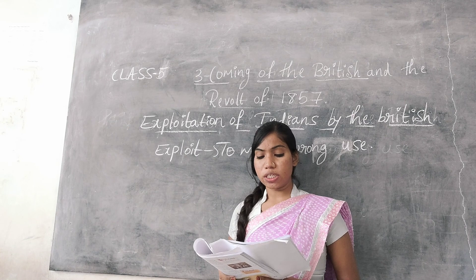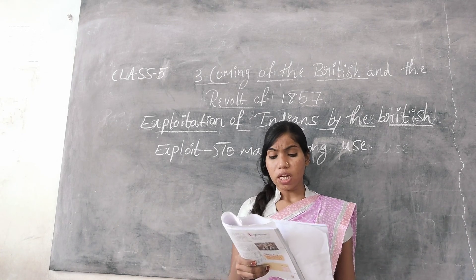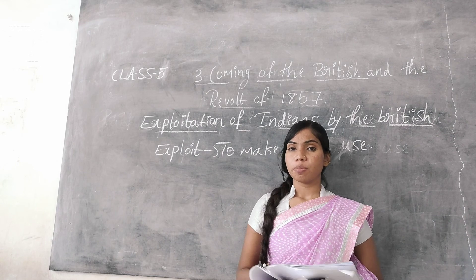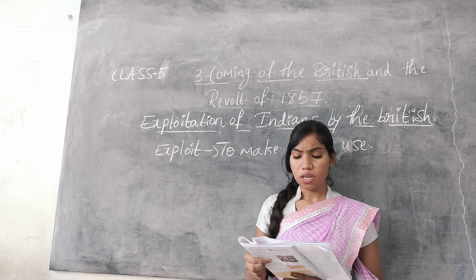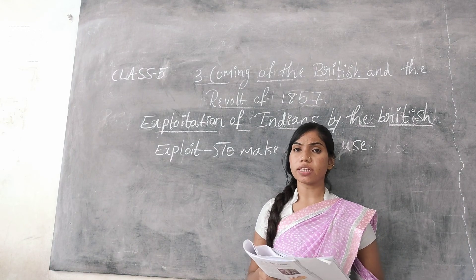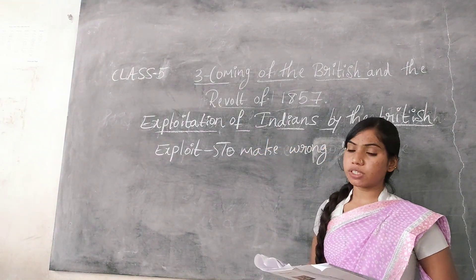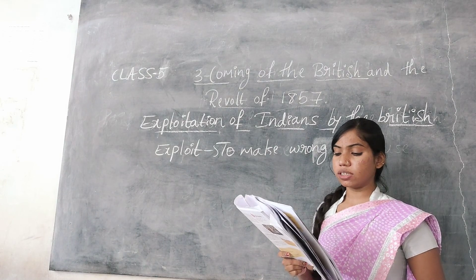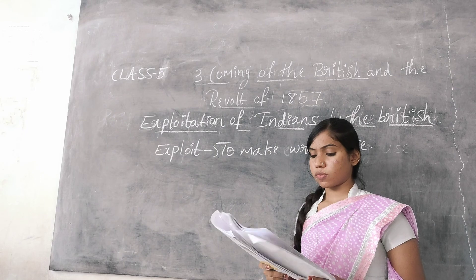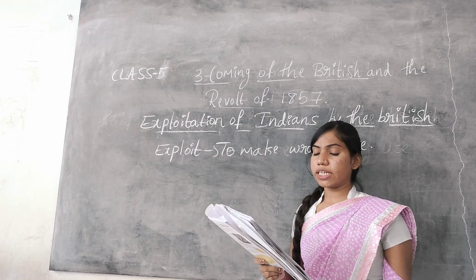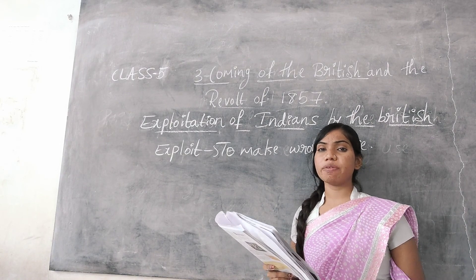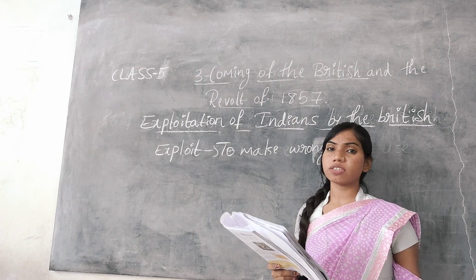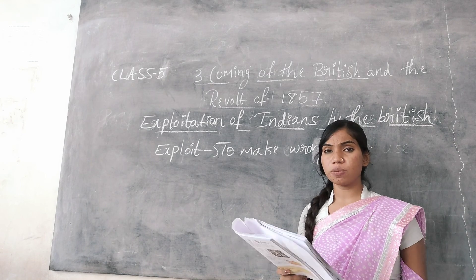The British began doing many unfair things with the Indians. The British began exploiting the farmers. Indian farmers had to pay heavy taxes irrespective of the yield they produced. As a result, they became very poor. Because of this heavy tax, the Indian farmers became very poor.